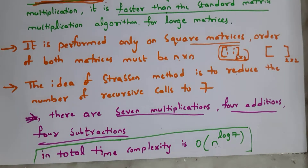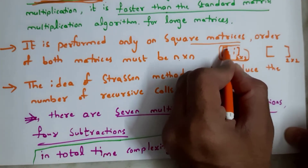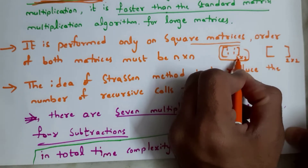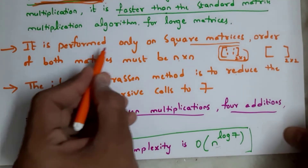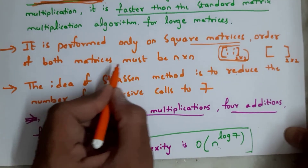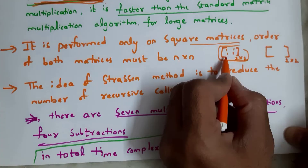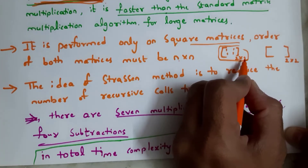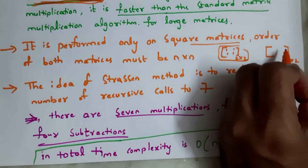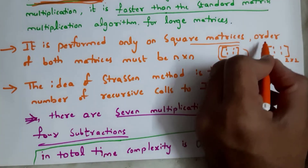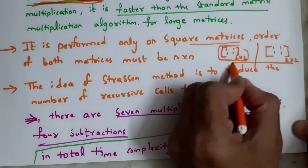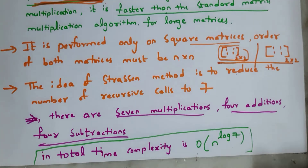We can perform Strassen's matrix multiplication only on a square matrix. A square matrix is one in which the number of rows is equal to the number of columns. For example, this is a square matrix because it contains two rows and two columns. It is performed only on square matrices, and the order of both matrices must be N×N. Similarly, both matrices should contain the same dimensions in order to perform Strassen's matrix multiplication.